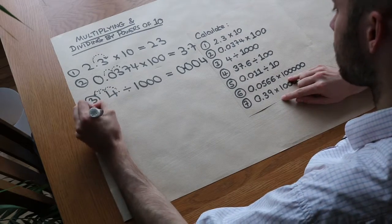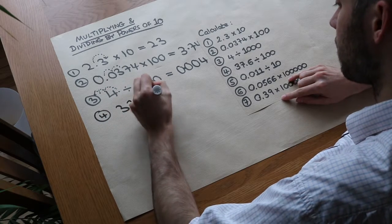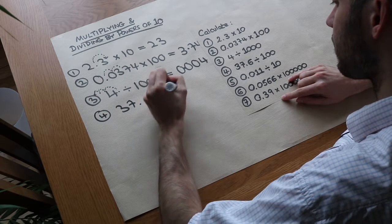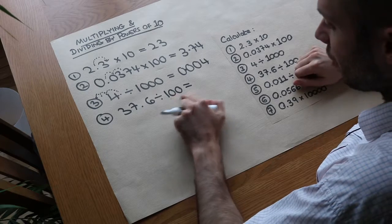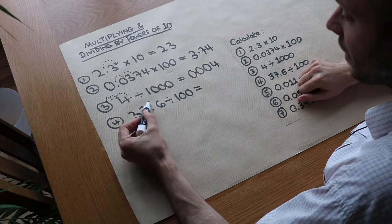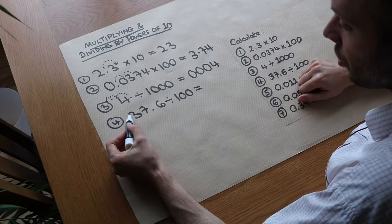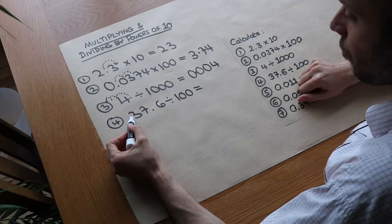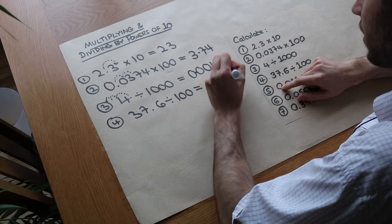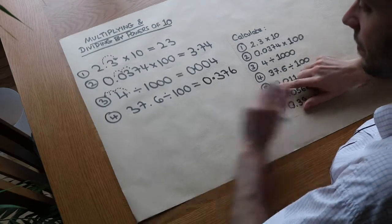What about 37.6 divided by 100? We can see 100 has two zeros, so it's going to move two places to the left — 1, 2 — so the decimal point is just before the 3, giving 0.376. We need to put a 0 just before the decimal point.